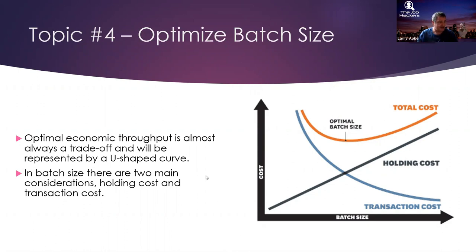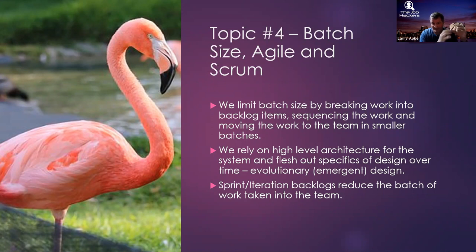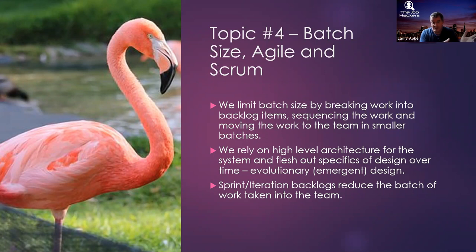We limit the batch size by breaking work into a backlog, then sequencing it and moving the smaller pieces into a sprint backlog — which is just a new, smaller batch. What is your batch size? It's two weeks. If you're tracking velocity or number of stories, your batch size is 10 stories plus or minus two — and you learn that in sprint planning. That's what you're doing: planning a smaller batch.